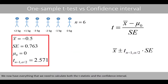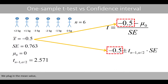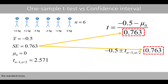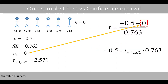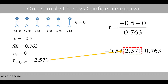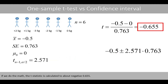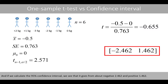We now have everything we need to calculate both the t-statistic and the confidence interval. We plug in the mean value, the standard error, the value of mu-zero, and the t-score. If we do the math, the t-statistic is calculated to about negative 0.655. The 95% confidence interval goes from about negative 2.462 to positive 1.462.